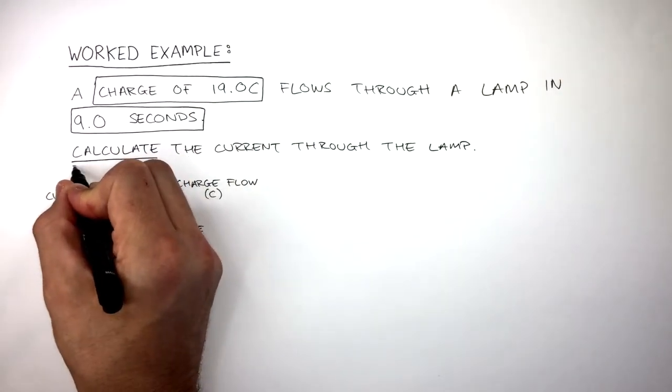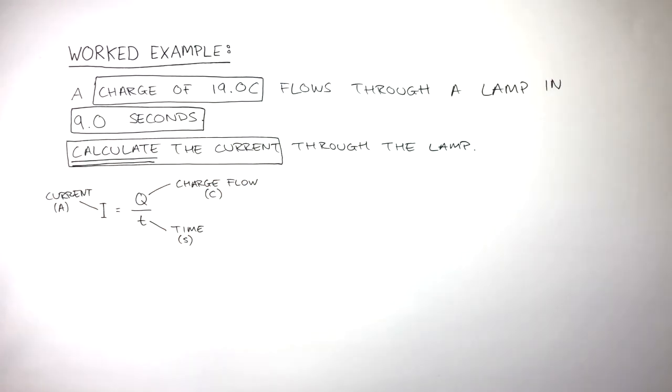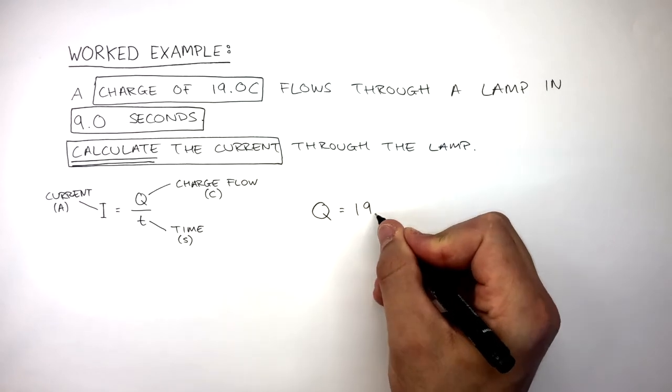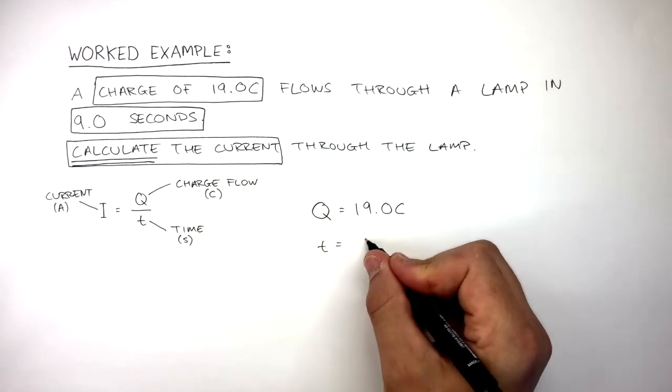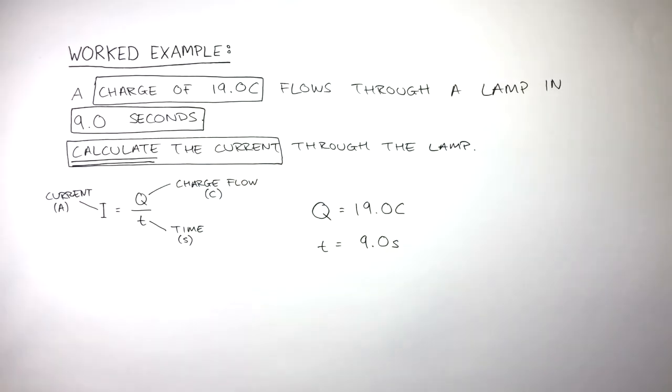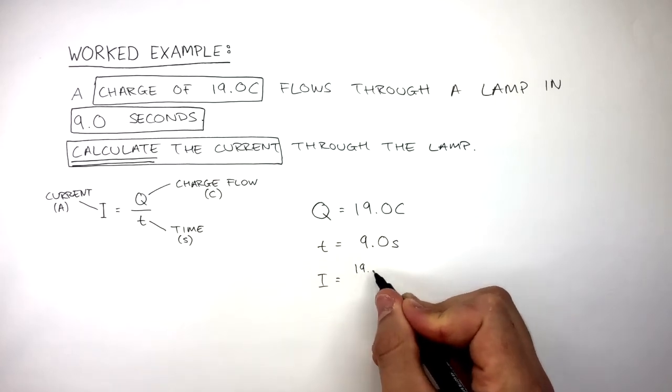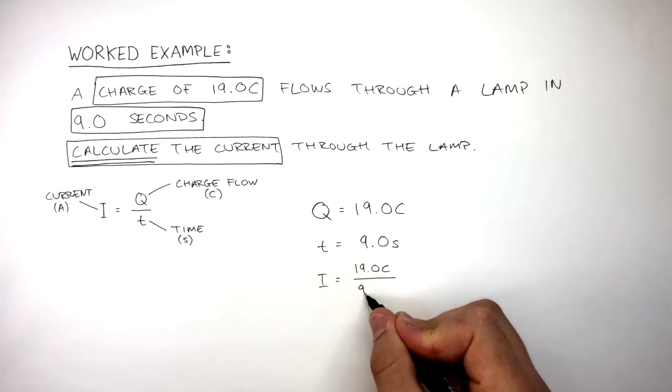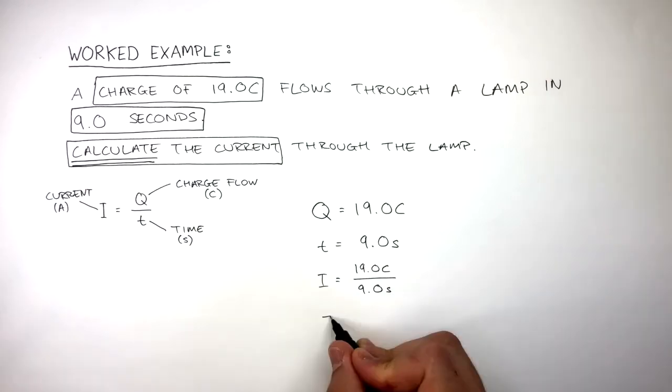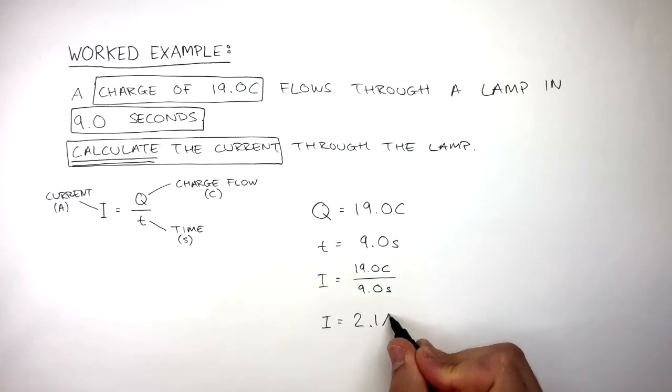In any calculation question, it's really important to put a square around the data. There's a charge of 19 Coulombs and the time is 9 seconds. We now clearly write out the data where Q equals 19 Coulombs, T equals 9 seconds. So now I equals 19 Coulombs divided by 9 seconds. The final answer is I equals 2.1 Amps.